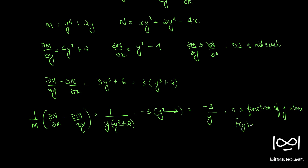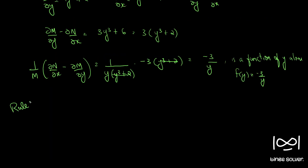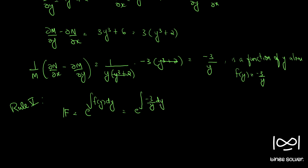Let's call that function f of y equal to minus 3 by y. Rule 5 says: in such cases where 1 by M into dou N by dou x minus dou M by dou y is a function of y alone, the integrating factor is e raised to integral f of y dy. So e raised to integral of minus 3 by y dy gives e raised to minus 3 log y, which gives us an integrating factor of 1 by y cubed.